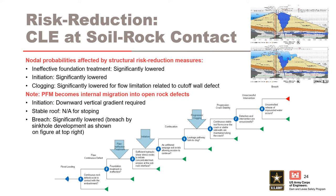These are the nodes that are typically targeted for concentrated leak erosion along the embankment foundation contact with the installation of a cutoff wall. A cutoff wall effectively addresses the continuity of the flow and introduces significant benefit of flow limitation if there is a construction defect in the wall. However, the concentrated leak erosion failure mode becomes non-credible and internal migration becomes the failure mode. Therefore, stable roof is not applicable for stoping and the breach mechanism becomes sinkhole development.